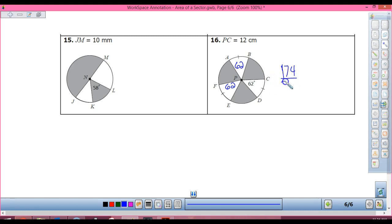174 over 360 times, now PC, is that my radius or my diameter? That's my radius. Be careful with that, because there's going to be some of them where they give you the diameter, and then make sure that you put it in half. So I'm timesing it by 144 pi, 69.6 centimeters squared.